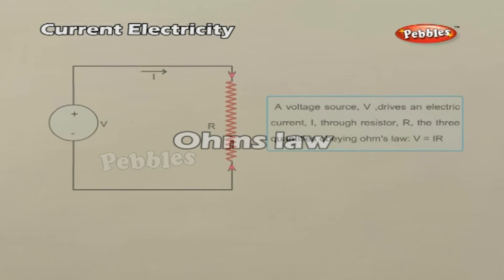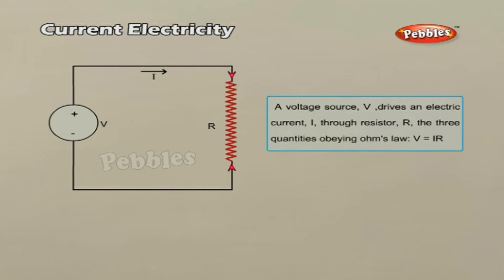Ohm's Law applies to electric circuits. It states that the current passing through a conductor between two points is directly proportional to the potential difference across the two points, and inversely proportional to the resistance between them. The mathematical equation is I proportional to V, or I equals V by R.